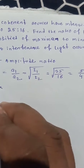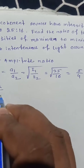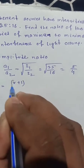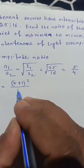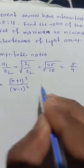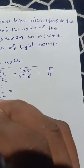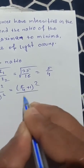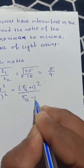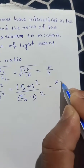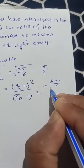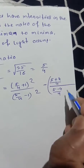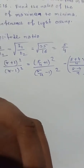We know that maximum intensity by minimum intensity equals (r + 1) whole square divided by (r - 1) whole square. Substituting r = 5/4: we get (5/4 + 1) whole square divided by (5/4 - 1) whole square, which equals (5 + 4)/4 whole divided by (5 - 4)/4 whole square.